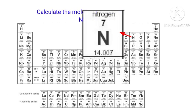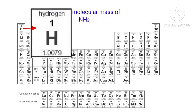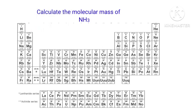The Atomic Mass of Nitrogen is 14.007 and the Atomic Mass of Hydrogen is 1.0079. In the NH3 molecule, there is 1 Nitrogen atom and 3 Hydrogen atoms present.